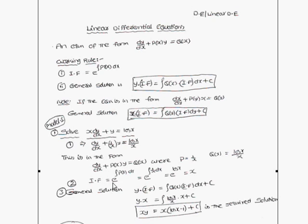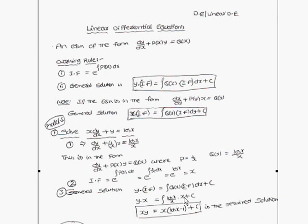The integrating factor is e to the power of the integral of P(x) dx, which is e to the power of the integral of 1/x dx, giving us x. For the general solution, y times the integrating factor x equals the integral of Q(x), which is log x over x, times the integrating factor x, plus c. Simplifying, xy equals x(log x minus 1) plus c, which is the required solution.